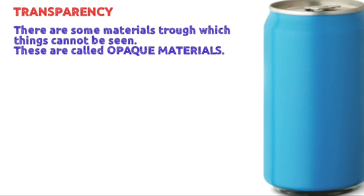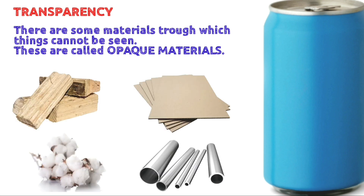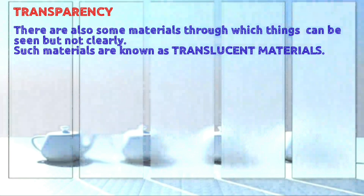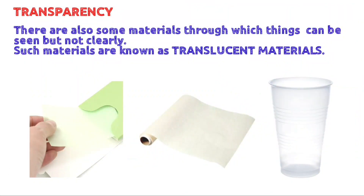On the other hand, there are some materials through which things cannot be seen at all — these are called opaque materials. Examples include wood, cardboard, cotton, and metals. There are also some materials through which things can be seen but not clearly — such materials are known as translucent materials. Examples include oil paper, wax paper, and some plastics.